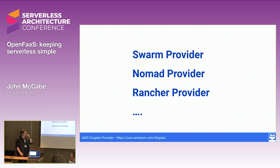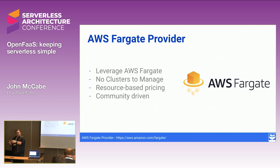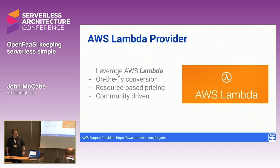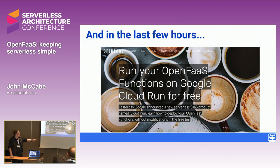There's a contributor, Ed Wilde, a platform architect for fintech company Form 3 in the UK, who built a Fargate provider where all your containers run on AWS Fargate, so you're only paying for things while they're running. He's also building a Lambda provider where you deploy your OpenFaaS function and it transforms it into a Lambda function. And literally about three hours ago, the project founder pushed out support to run your OpenFaaS functions on Google Cloud Run, which Google announced last night.